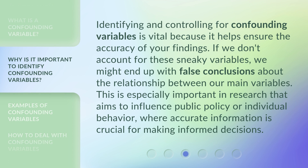Identifying and controlling for confounding variables is vital because it helps ensure the accuracy of your findings. If we don't account for these sneaky variables, we might end up with false conclusions about the relationship between our main variables. This is especially important in research that aims to influence public policy or individual behavior, where accurate information is crucial for making informed decisions.